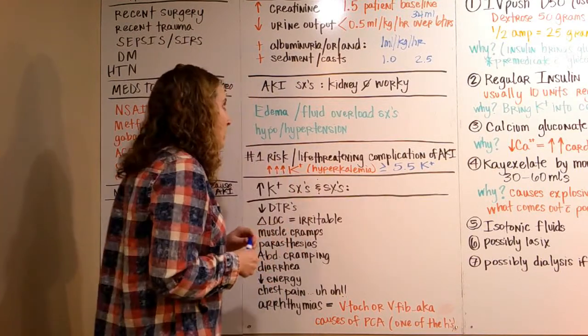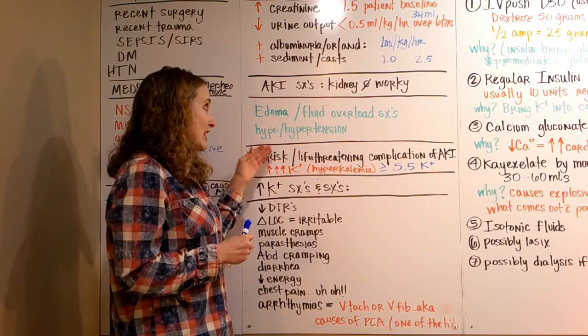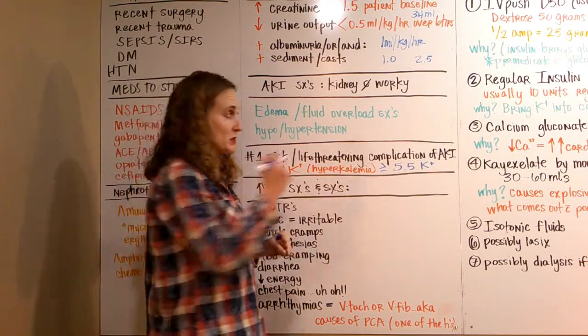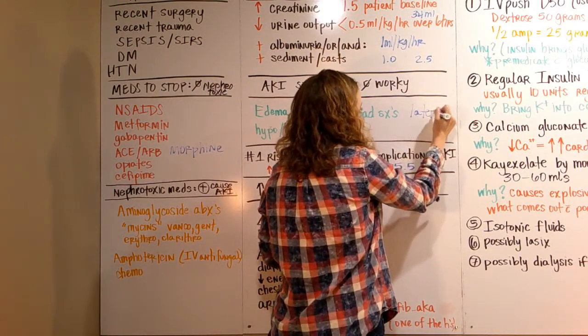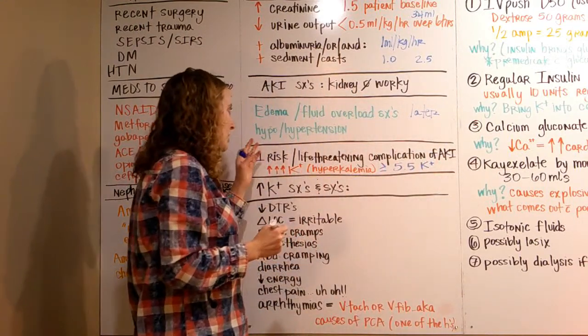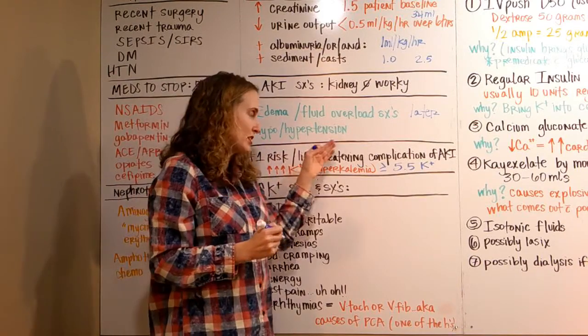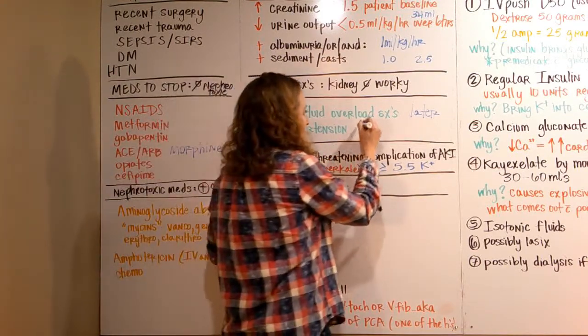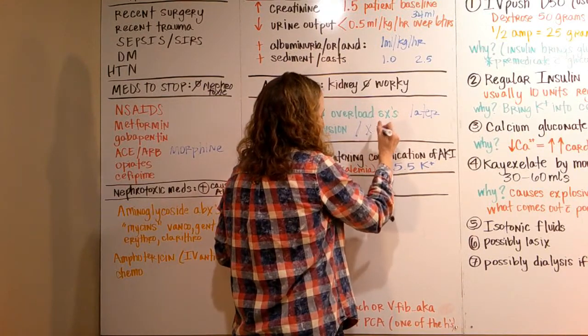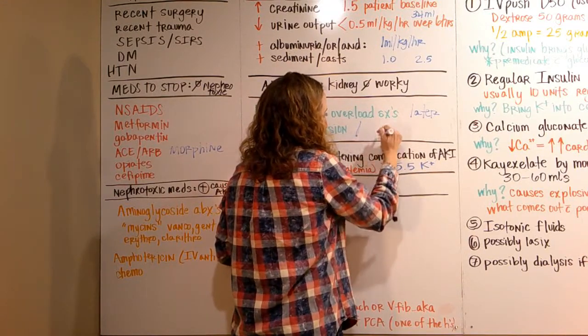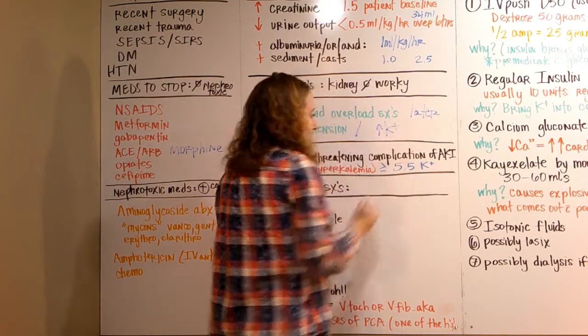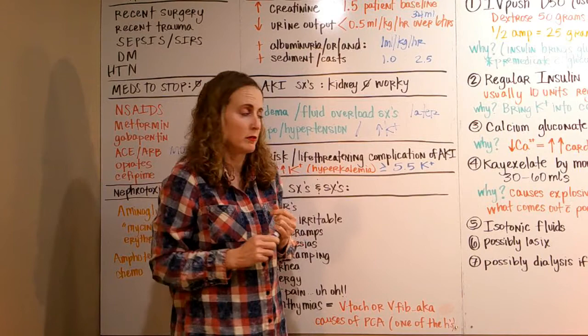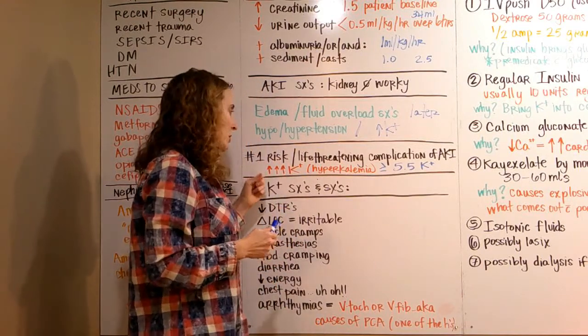Kidney injury signs and symptoms: they're going to have edema, fluid overload symptoms—this might happen later. They might be hypotensive or hypertensive depending on where they're at in their fluid status. And they're going to have signs and symptoms of hyperkalemia, possibly. That's going to be something you need to monitor and look for.